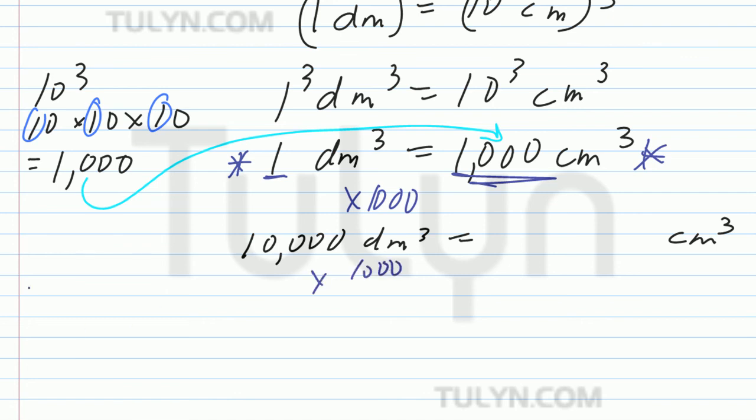So, what do you think 10,000 times 1,000 would be, right? Go ahead and multiply your non-zero numbers. 1 and 1. That's going to be 1. Count your zeros. 1, 2, 3, 4, 1, 2, 3. Add them together, right?